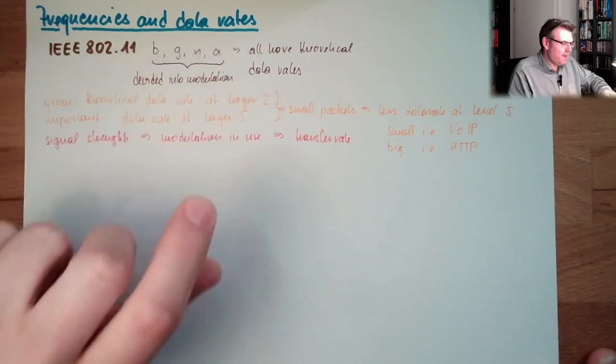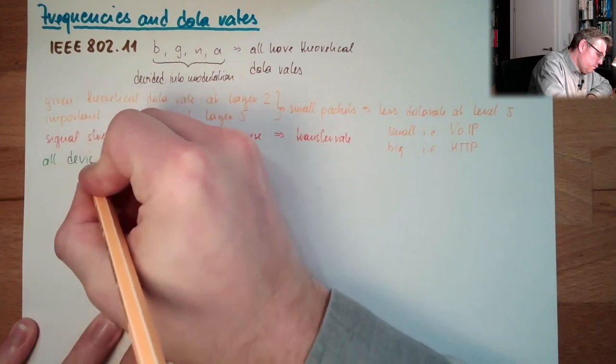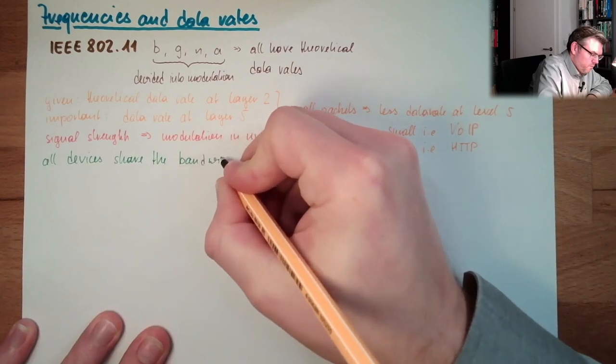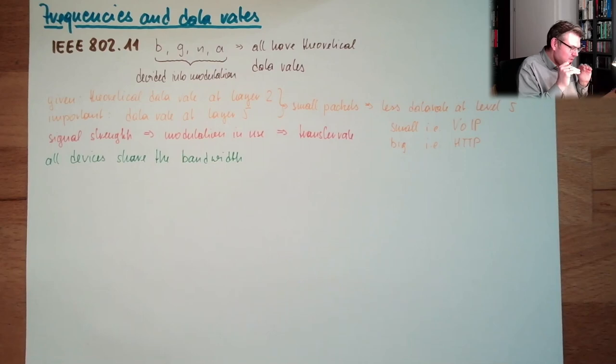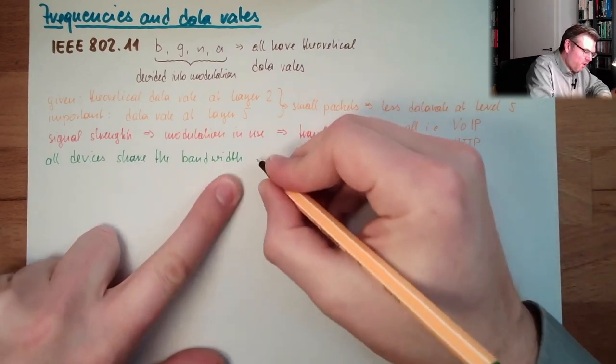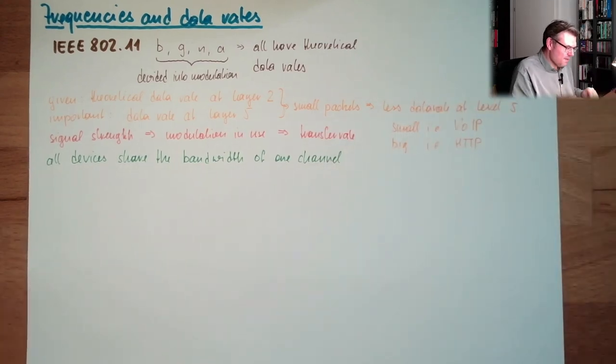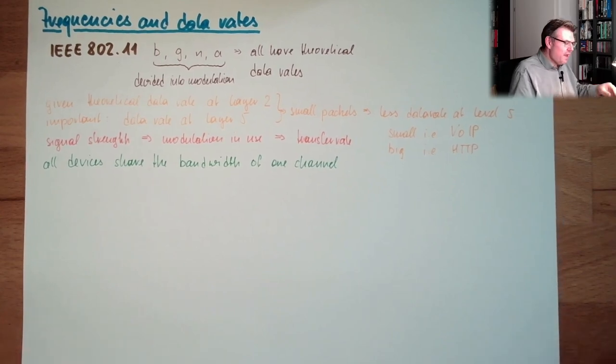There is one thing more: all devices share the bandwidth. It's one air, there is one communication medium, so we have to share this communication medium. All devices share the bandwidth of one channel. It's even worse, I will show you. All devices using the same channel share the bandwidth. They have to wait for each other and all that stuff.